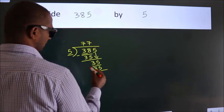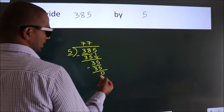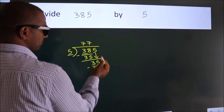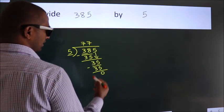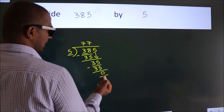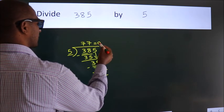Now we subtract. We get zero. After this, no more numbers to bring down, and we got remainder zero. So this is our quotient.